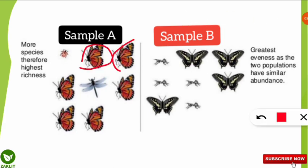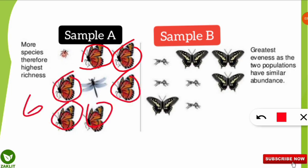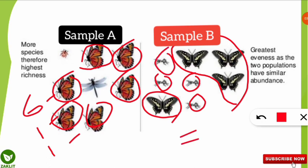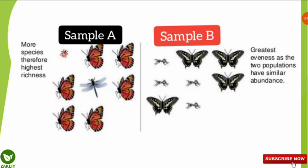To understand species evenness, we compare both samples. In sample A there are six butterflies, one dragonfly, and one beetle — so there is no evenness in the number of individuals across species. In sample B there are four butterflies and four ants, evenly distributed, so sample B has the greatest species evenness. Sample A has lesser species evenness despite being more species rich.